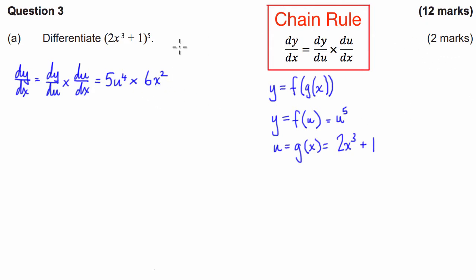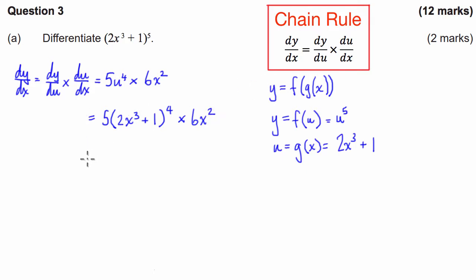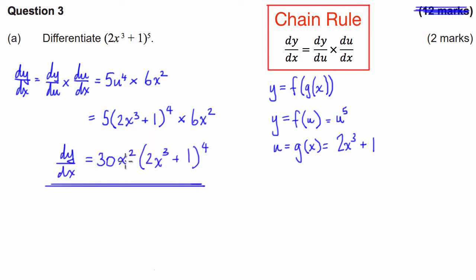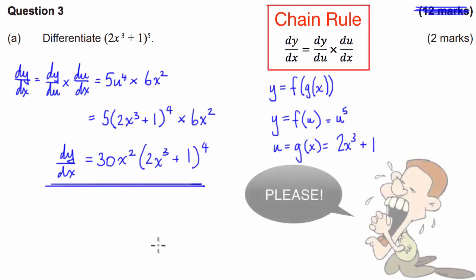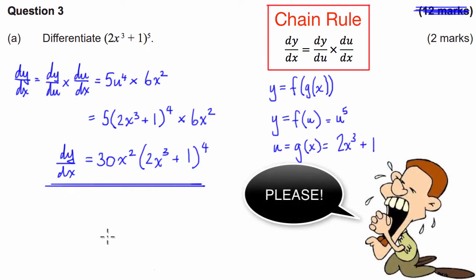Finally, the way we finish this question off — that's why it's only worth 2 marks — is we substitute u, the substitution variable, back into our derivative and multiply by the derivative of our substitution variable. Simplifying: 6 times 5 is 30, giving us 30x squared times (2x cubed plus 1) all to the power of 4, and that's our final solution.